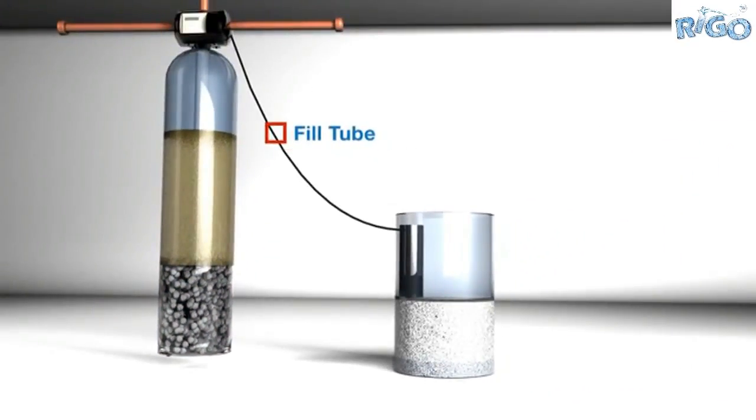Next we have the fill tube. In the softener process, it's necessary to have a tube that connects the head with the brine tank. This tube has two functions. It's used to draw the brine out of the brine tank and it's also used to refill the brine tank for future regeneration.